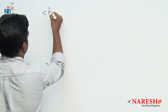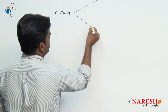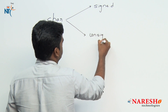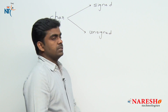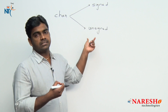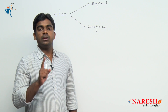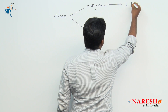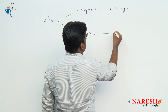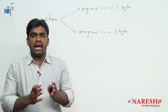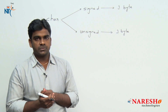Character data type, just like a short data type, is divided into two types. One is a signed data type and the second one is unsigned data type. A character occupies only one byte of memory, either a signed byte or an unsigned byte. Unsigned means it will accept only positive values, and signed means it will accept both positive and negative values.